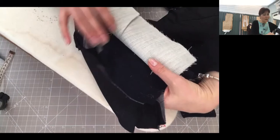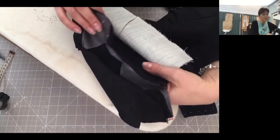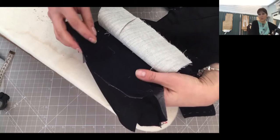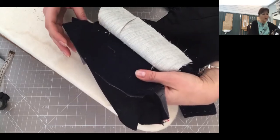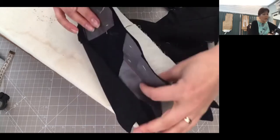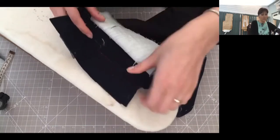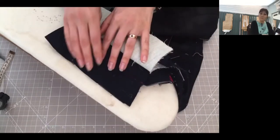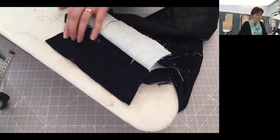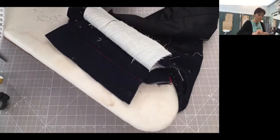But for this one, we don't need to keep so much seam allowance. We're going to trim them. If you don't need it, sometimes it can be in the way, so I'm going to cut them to 2.5 centimeters.